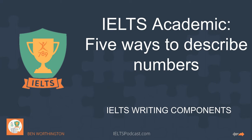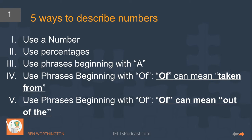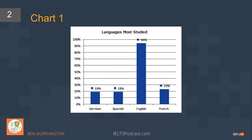In IELTS academic task 1, we're going to look at five different ways to describe numbers — for the pie chart, for the bar chart, for the flow diagram, whenever numbers appear. We can use numbers, we can use percentages, we can use phrases beginning with 'a', or we can use two types of phrases beginning with 'of'. Let's get straight to it.